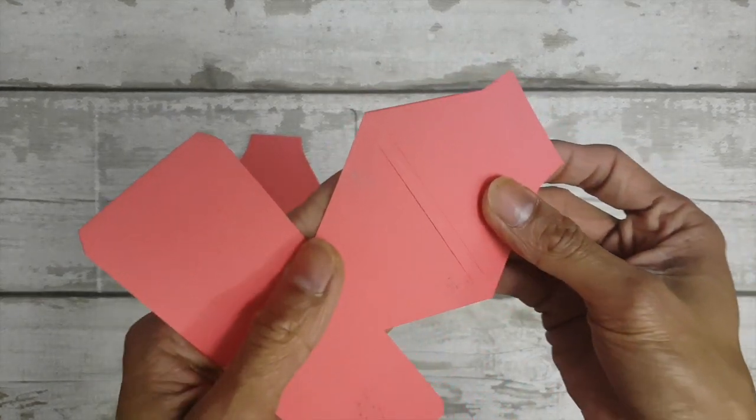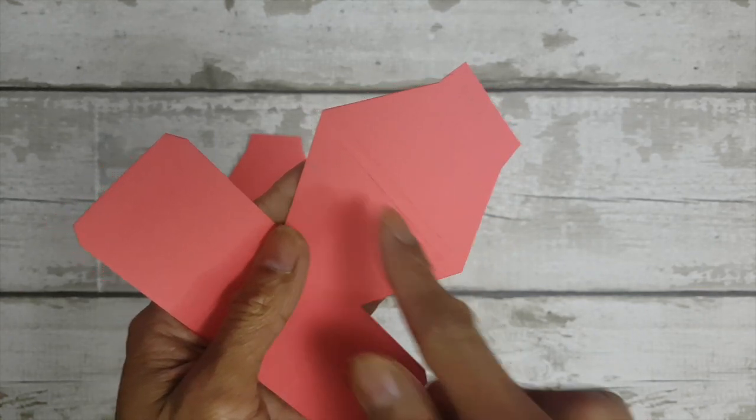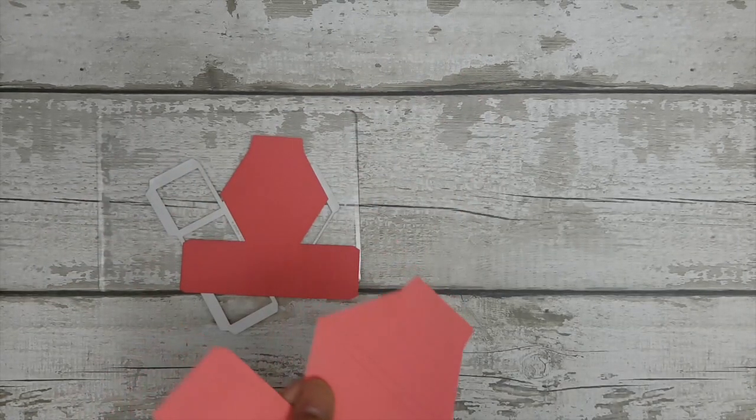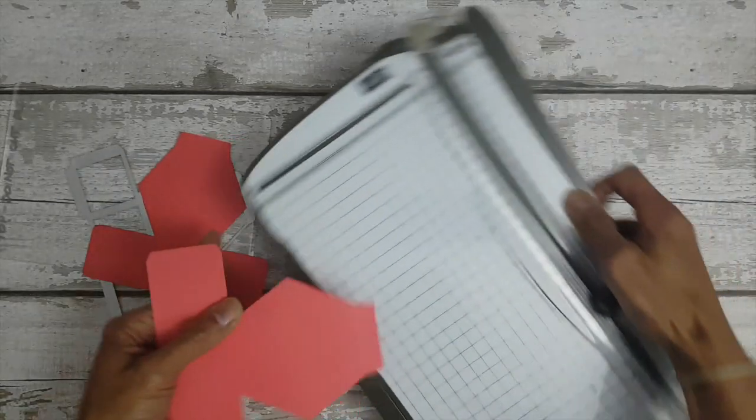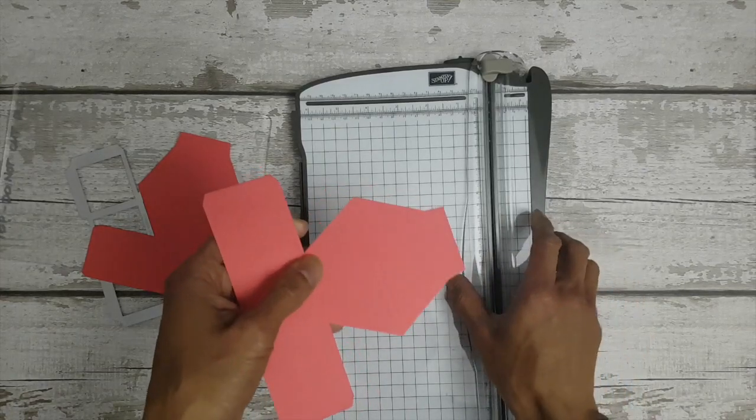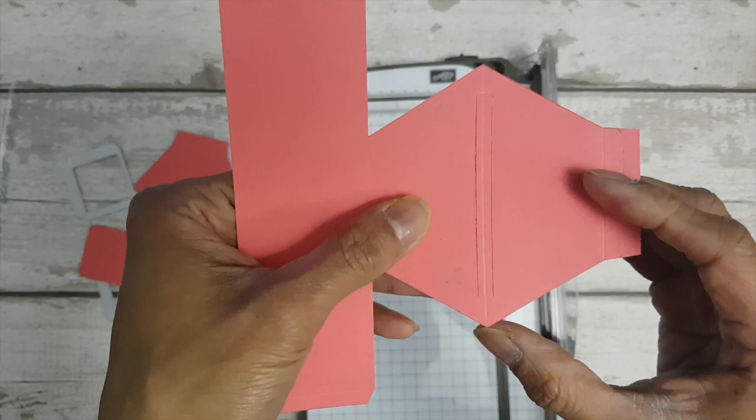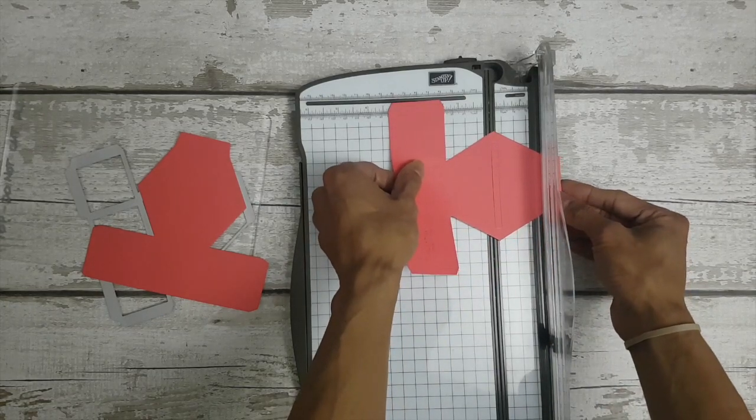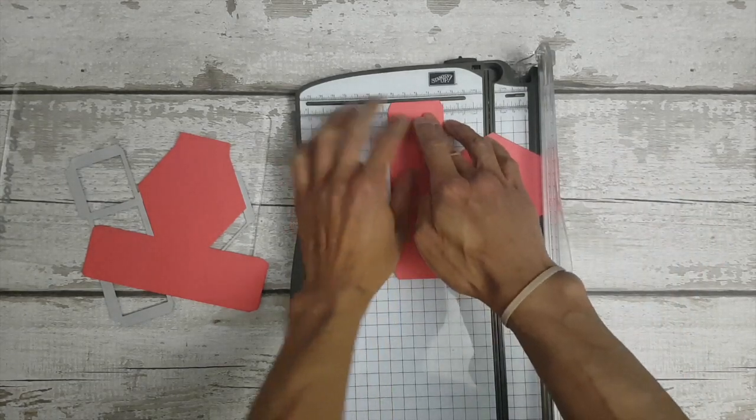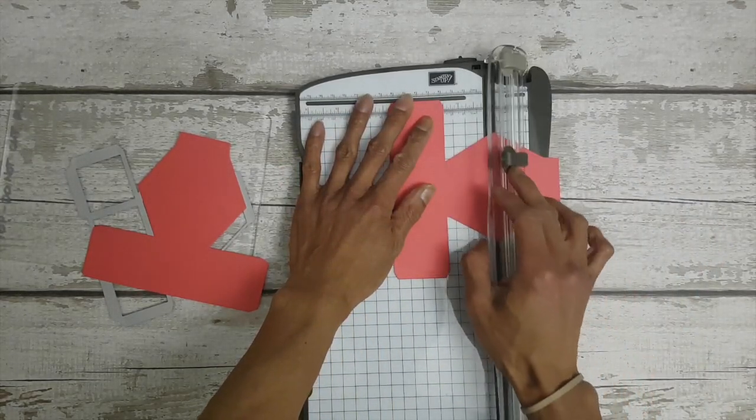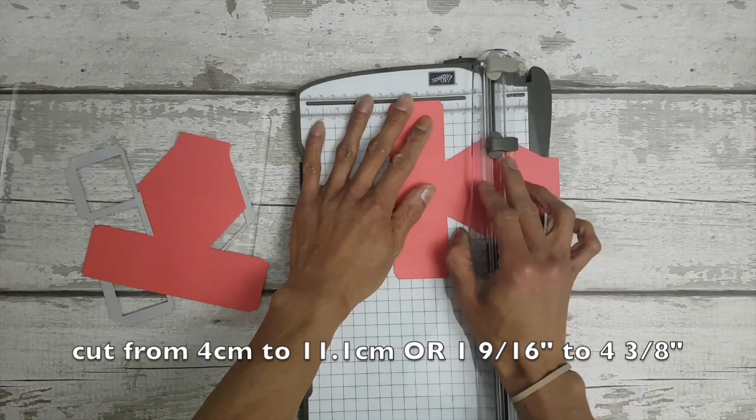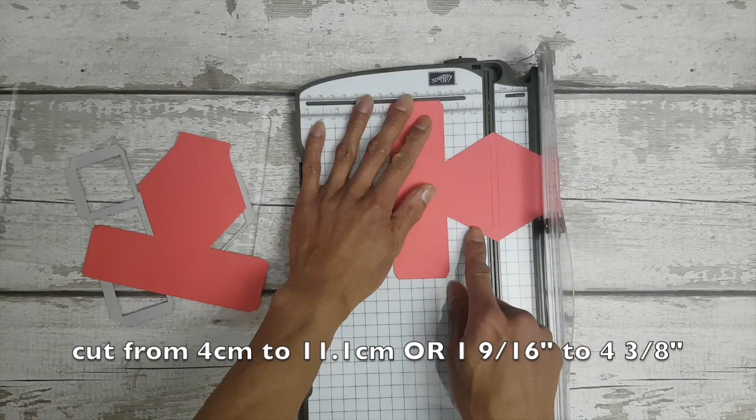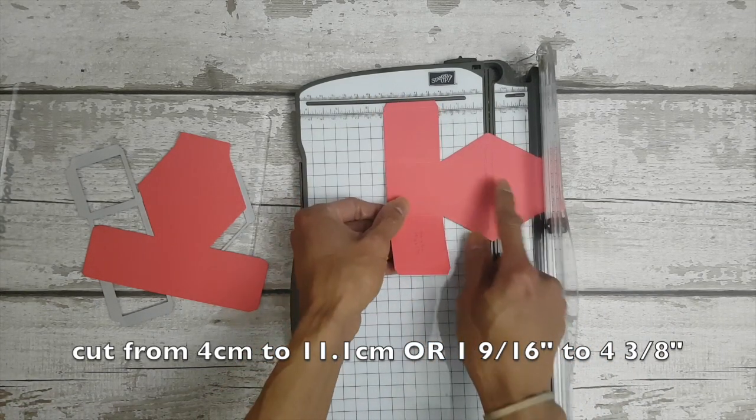On the second one do the same but this time we will be making a cut in the middle so that will be where your image will pop up. You'll need your stamp and trimmer for this and if you align the two points on the side of the cutting path it'll be aligned at one eighth of an inch so then you're actually not cutting on the middle of the hexagon and you will be cutting from four centimeters down to eleven point one centimeters or in inches that's one and nine sixteenth of an inch to four and three eighth of an inch.